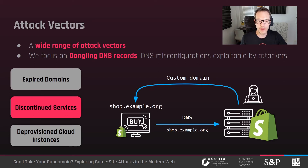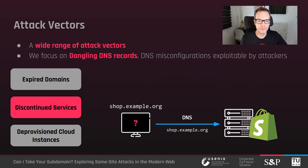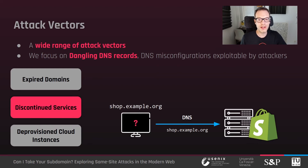For example, shop.example.org is an eShop hosted by Shopify. This kind of integration is typically done in two steps. First, the site operator creates a DNS record for shop.example.org that points to the IP of the service provider. Then, the site operator creates the eShop on the service provider website and sets a custom domain for it. If the DNS record is still in place but the legitimate account is discontinued, accessing the website like shop.example.org typically results in an error. When this happens, we refer to the DNS record as dangling.